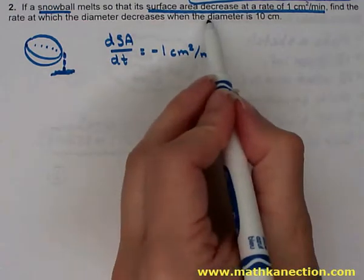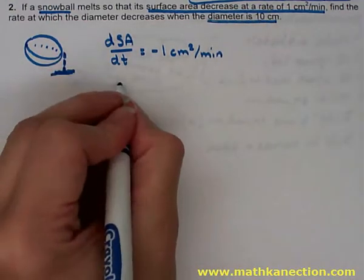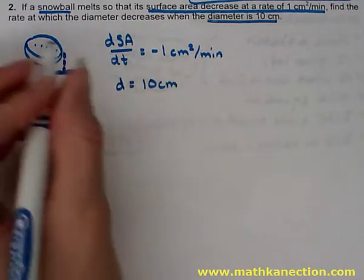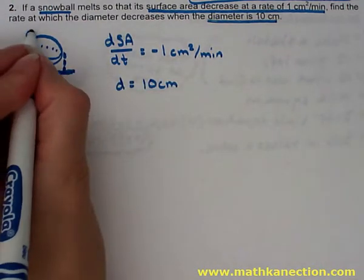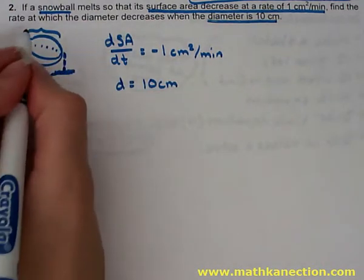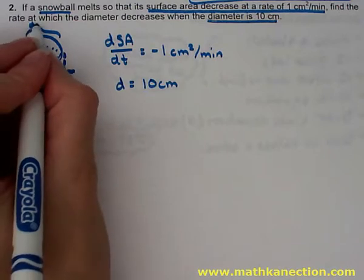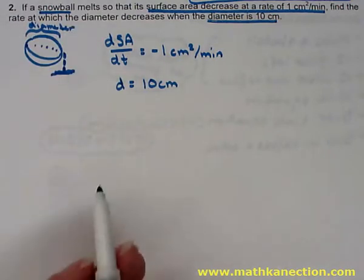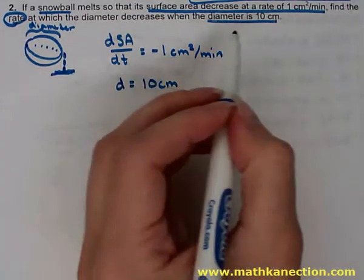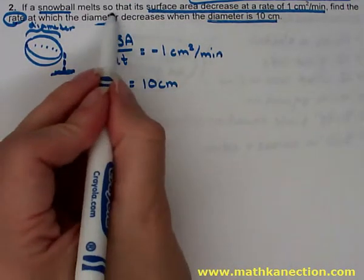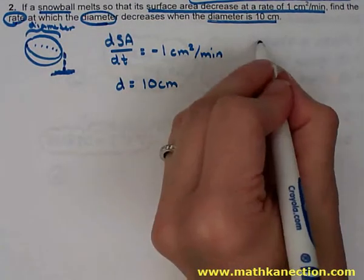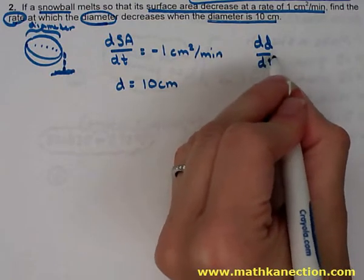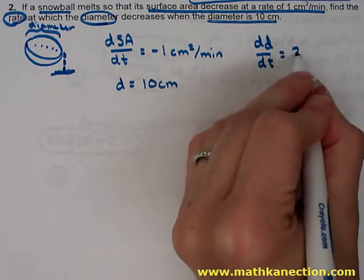Another piece of given information is that the diameter is 10 centimeters, so we label D for diameter equals 10 centimeters and identify the diameter in the drawing as well. The question asks us to find the rate at which the diameter is decreasing, so we are looking for dD/dt, the rate of the diameter with respect to time.